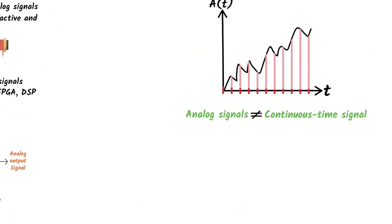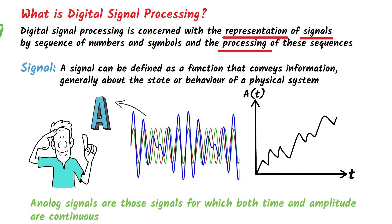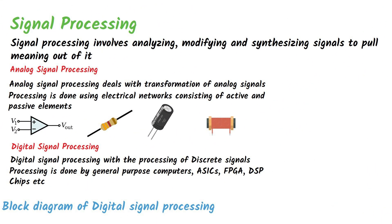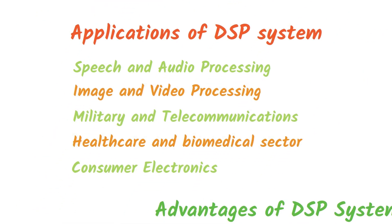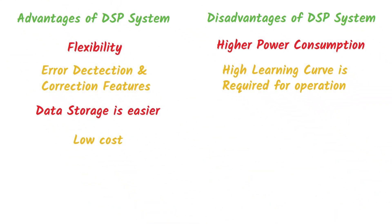In summary, we defined a signal and learned that signals are primarily classified into analog signals and discrete signals. We then explored signal processing, which involves analyzing, modifying, and synthesizing signals. We saw the block diagram of DSP systems, followed by the applications, advantages, and disadvantages of DSP systems. I hope all the concepts taught in this lecture are clear.